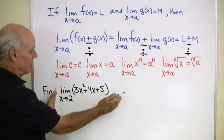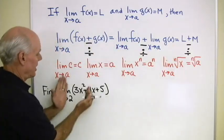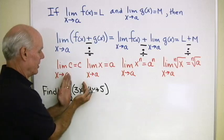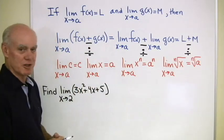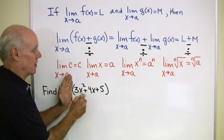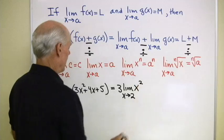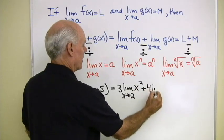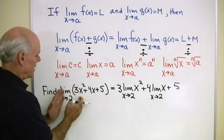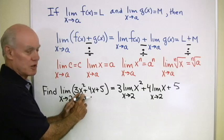Now let's use these theorems to evaluate a limit: the limit as x goes to 2 of 3x² + 4x + 5. The sum rule tells us we can take each term's limit separately — the limit as x goes to 2 of 3x², plus the limit as x goes to 2 of 4x, plus the limit as x goes to 2 of 5. For the first term, the product rule gives us 3 times the limit as x goes to 2 of x², plus 4 times the limit as x goes to 2 of x.